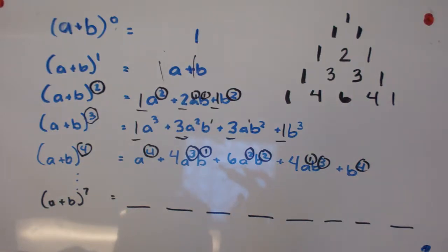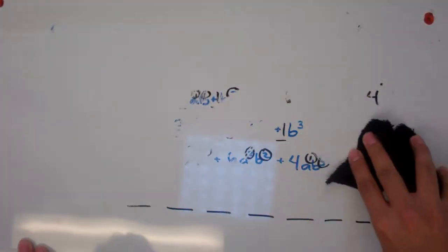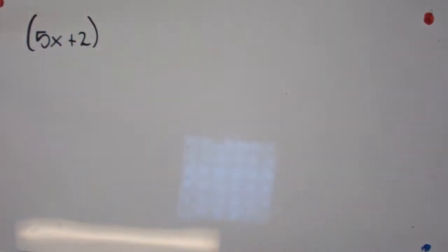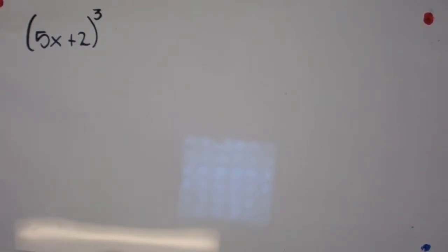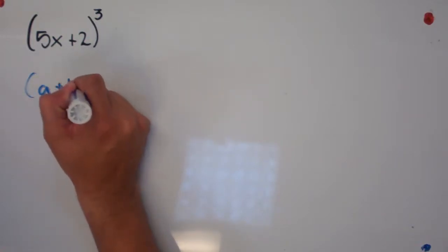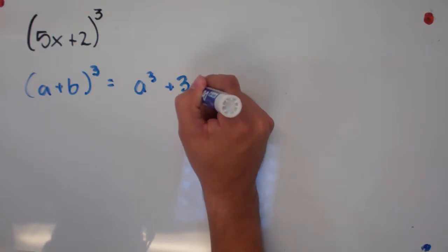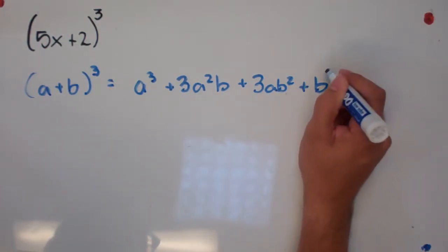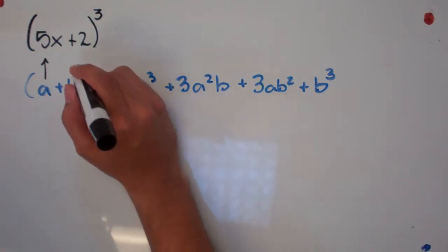Now we're going to work on an example of expanding a binomial. Our example is going to be five x plus two, and this is raised to the third power. Since we have it to the third power, I'm going to write the expansion for a plus b to the third power, which was: a cubed plus three a squared b plus three a b squared plus b to the third power. With this form, I can tell what my a and b are. In this case, a is five x and b is two.